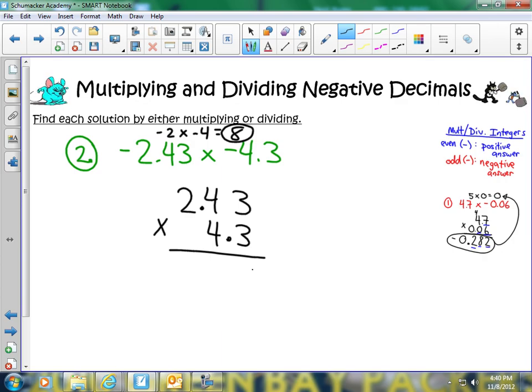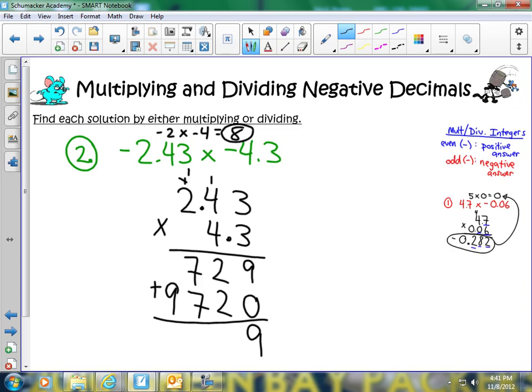So 3 times 3 is 9. 3 times 4 is 12. Carry my 1. 3 times 2 is 6, plus 1 is 7. And then I'm going to bring a 0 down here because I'm 1 place over. I'm going to do 4 times 3 is 12. Carry my 1. 4 times 4 is 16, plus 1 is 17. Carry my 1. 4 times 2 is 8, plus 1 is 9. Now I can add. 9 plus 0 is 9. 2 plus 2 is 4. 7 plus 7 is 14. Carry my 1. 1 plus 9 is 10.